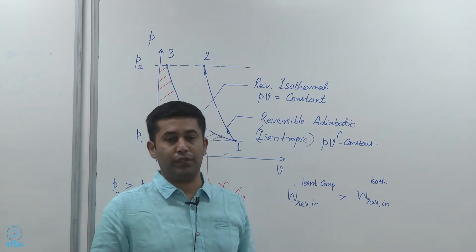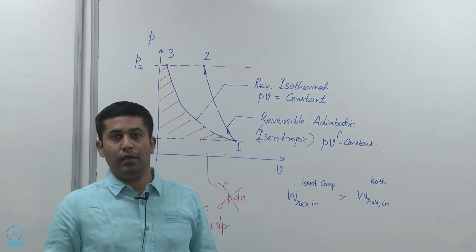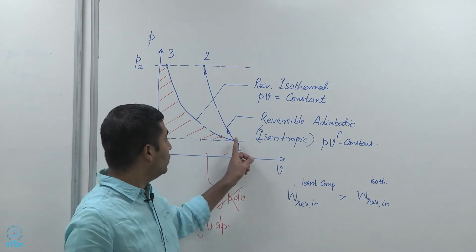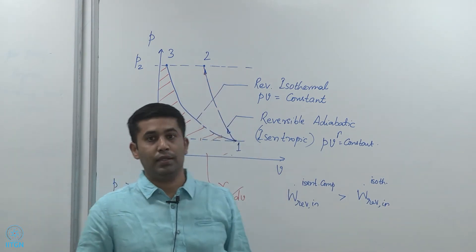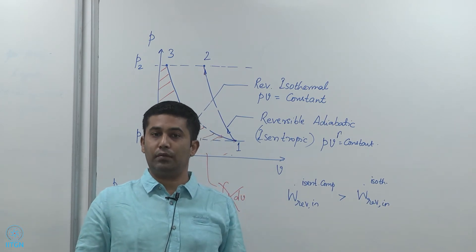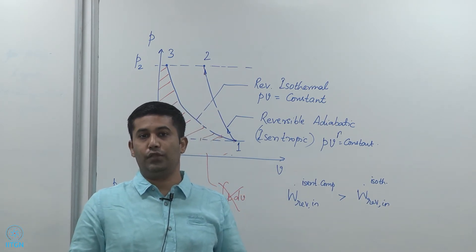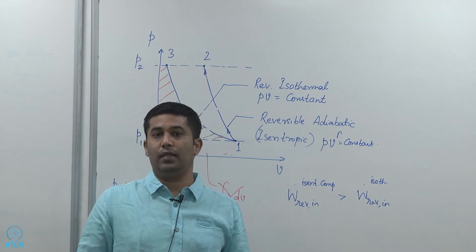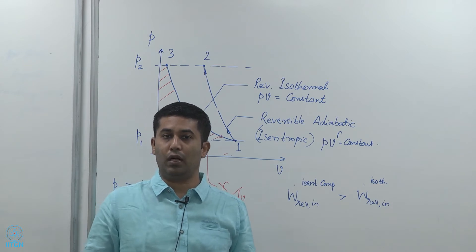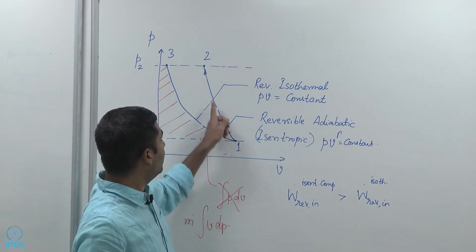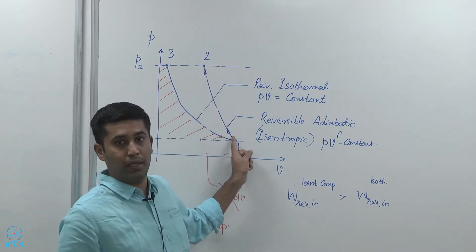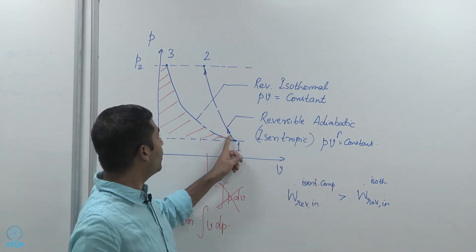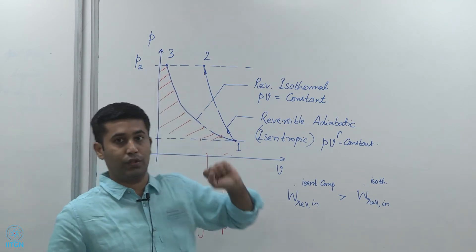If we make compressors without paying attention to heat transfer, we would probably end up making a compressor that is very close to an adiabatic compressor. That is, no heat is lost from the compressor, because heat transfer takes time, and so if the throughput of the compressor is quite high we would not have any heat transfer and would end up more or less following the reversible adiabatic line.